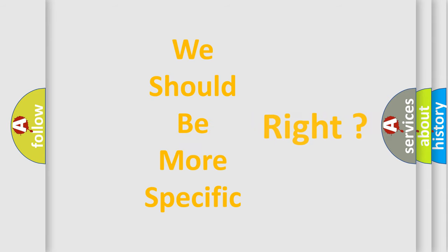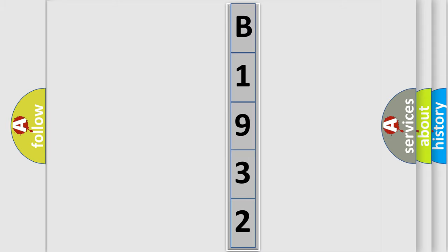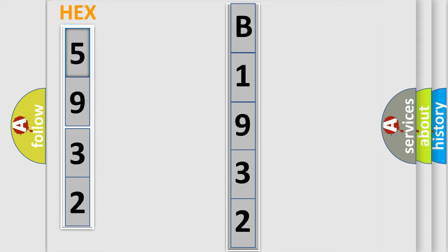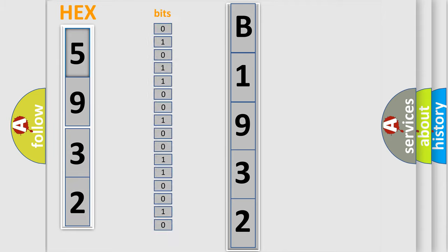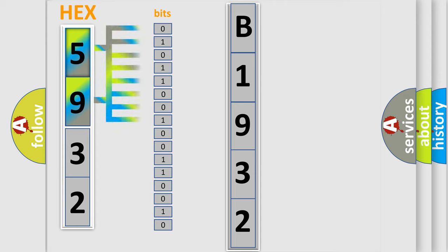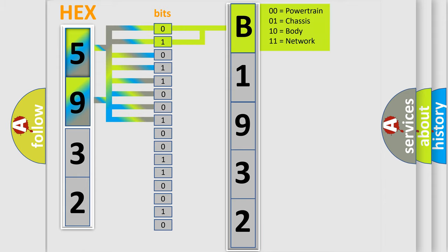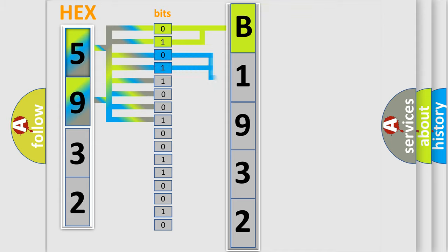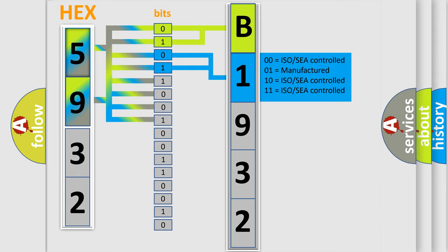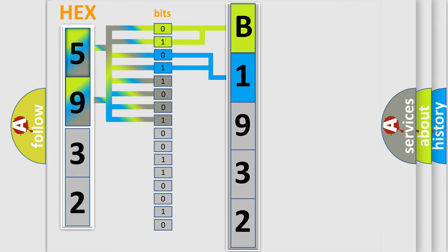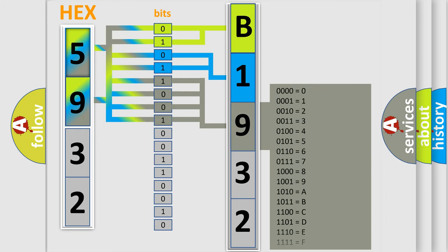The following demonstration will help you look into the world of software for car control units. The error code is split into two bytes consisting of 16 bits. One bit is the basic unit that each computer works with. The bit has two logical states: zero, low level, and one, high level. By combining the first two bits, the basic character of the error code is expressed. The next two bits again determine the second character. The last bits of the first byte define the third character of the code.